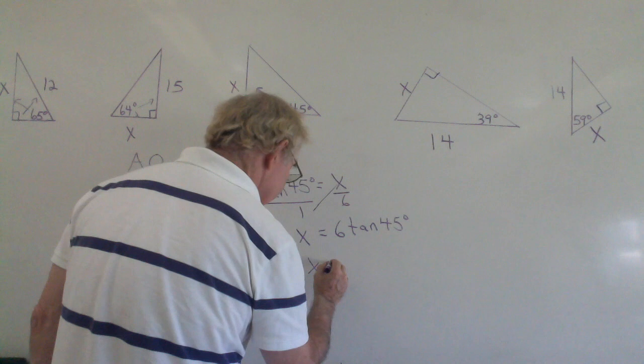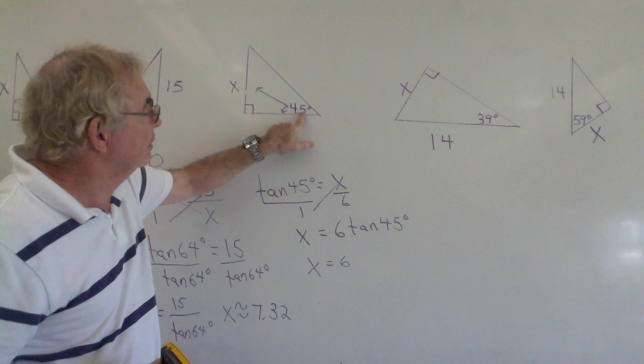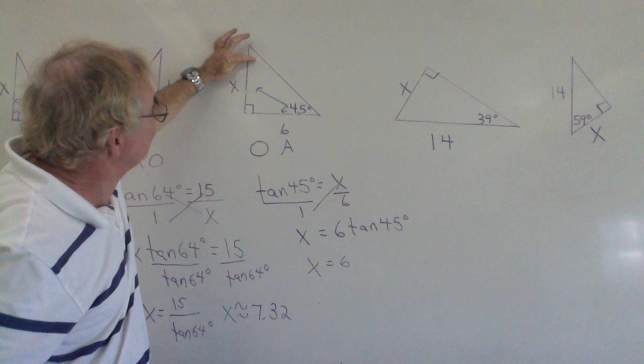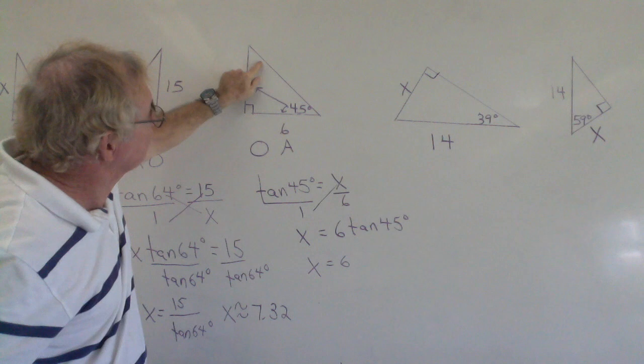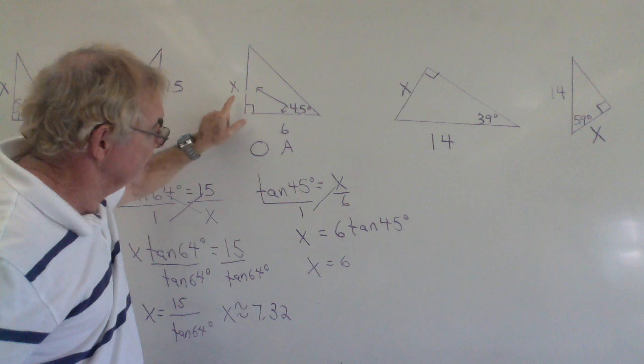Some interesting conclusions: if this angle is 45° and the right angle is 90°, the three angles must add up to 180°, so the third angle must also be 45°. If you have two equal angles — 45° and 45° — then the opposite sides must be equal. So side x equals side 6, which is confirmed by our trig calculation.